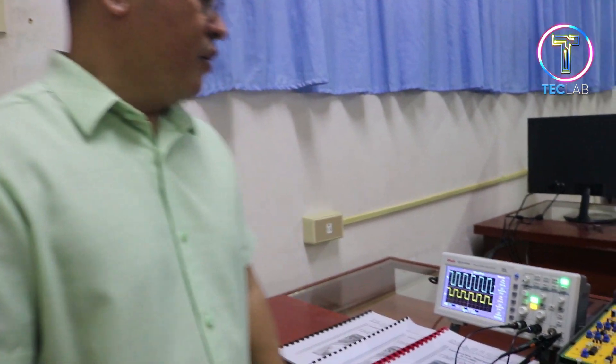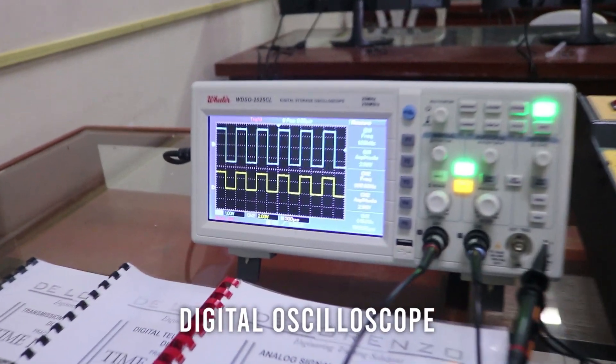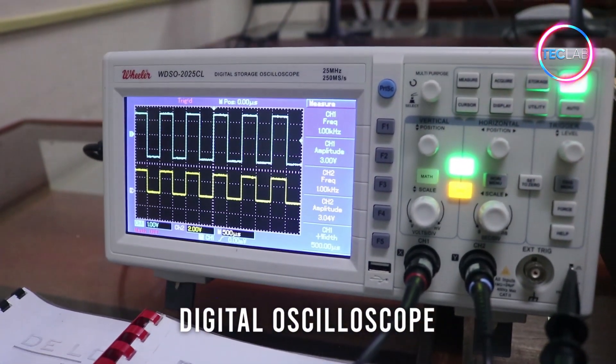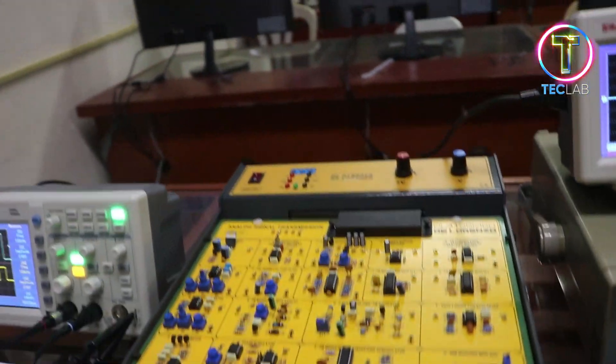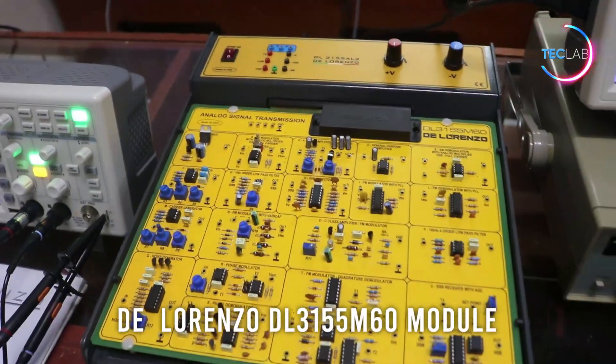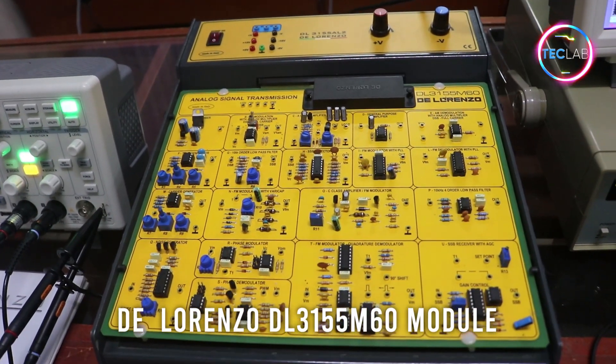For the series of communication systems laboratories, this is the typical setup. We have here the digital oscilloscope, that is the 25MHz digital dual scope. We also have the DeLorenzo special module, the analog signal transmission module which is the D155M60.